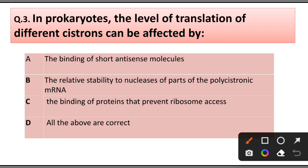Question number 3: In prokaryotes, the level of translation of different cistrons can be affected by: A) The binding of short antisense molecules, B) The relative stability to nucleases of parts of polycistronic mRNA, C) The binding of proteins that prevent ribosome access, D) All of the above are correct. Answer is option D, all of the above are correct.